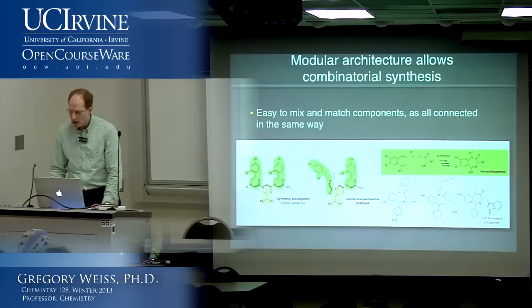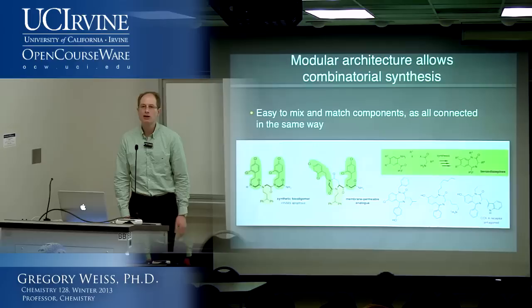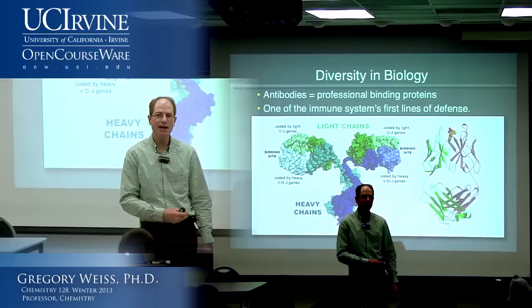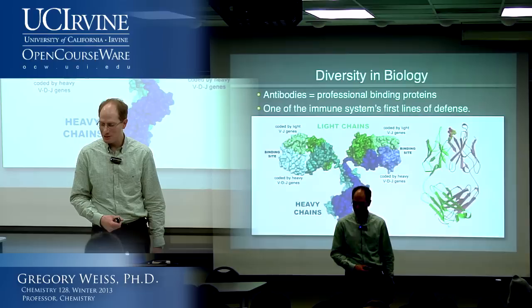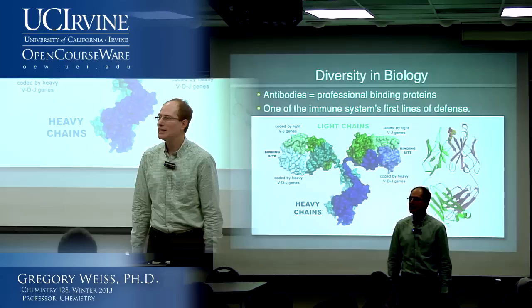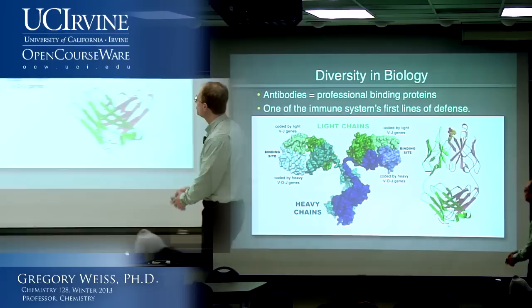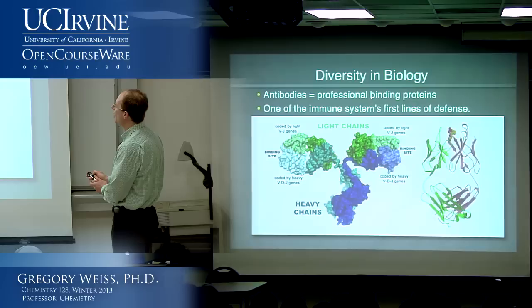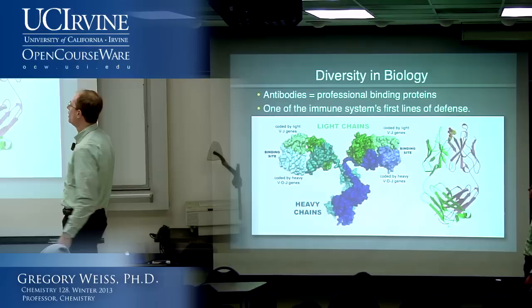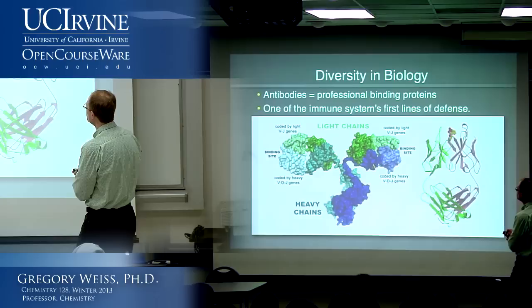That's the example of using combinatorial chemistry in the synthetic laboratory. This principle borrows heavily from biology. It turns out that your immune system uses a similar principle to develop diverse molecules called antibodies, which are one of the first lines of defense against foreign invaders. Antibodies' job is to be binding proteins - their job is to grab on to non-self molecules. I'm going to refer to this class of compounds as professional binding proteins. That's their profession, and it's one of the immune system's first lines of defense.